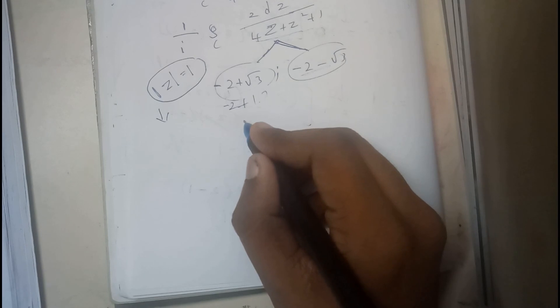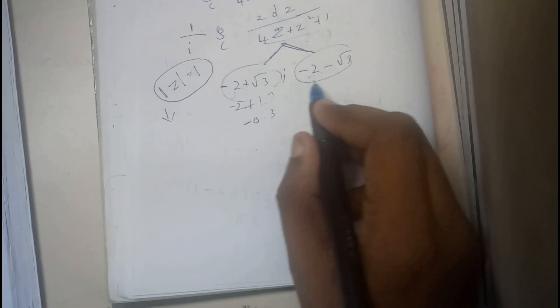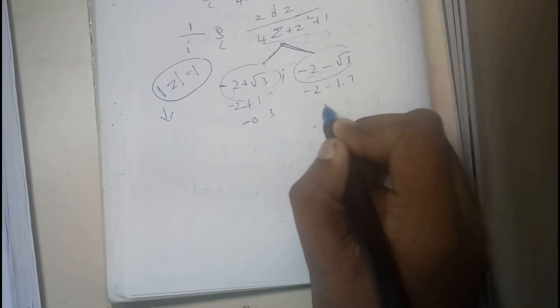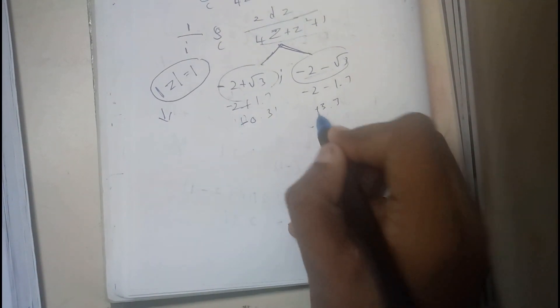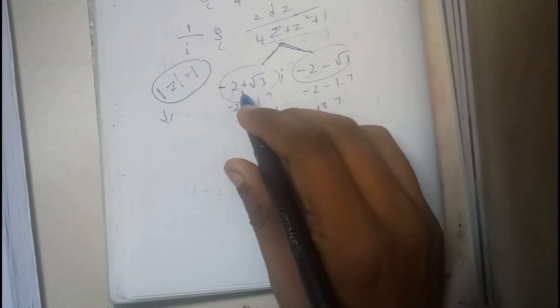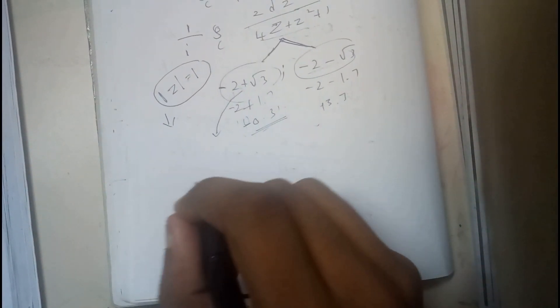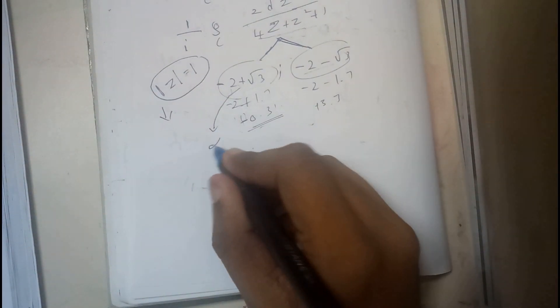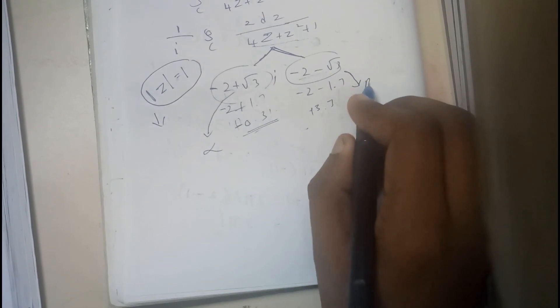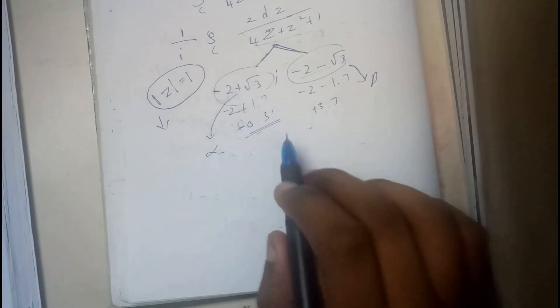Let us assume that, so 1.7 we're gonna get minus 0.3, whereas here minus 2 minus 1.7, it's going to be minus 3.7. So mod is nothing but plus, and plus here. This point is going to be inside.